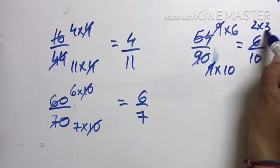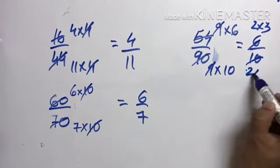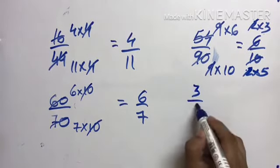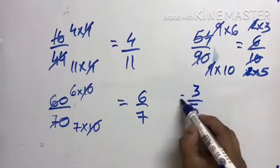Both come in 2's table. 2 times 3 and this one is 2 times 5. 2 and 2 cut. What's left? 3 by 5, understood?